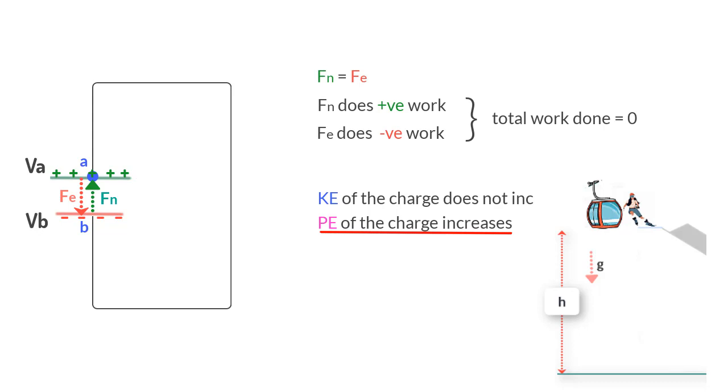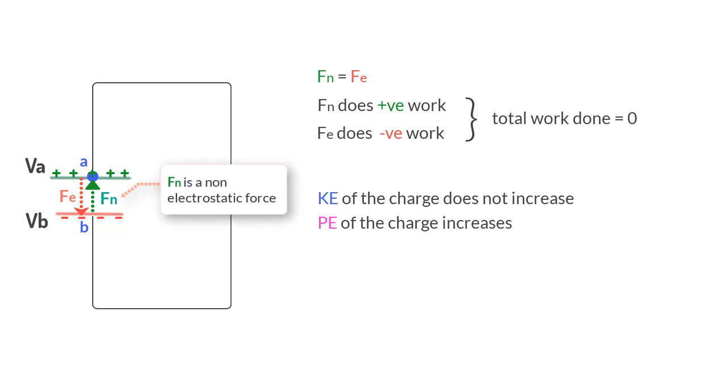So this source of non-electrostatic force continuously maintains this potential difference VA minus VB between the terminals to allow the charge to keep moving around in the circuit and therefore helps generate the current.